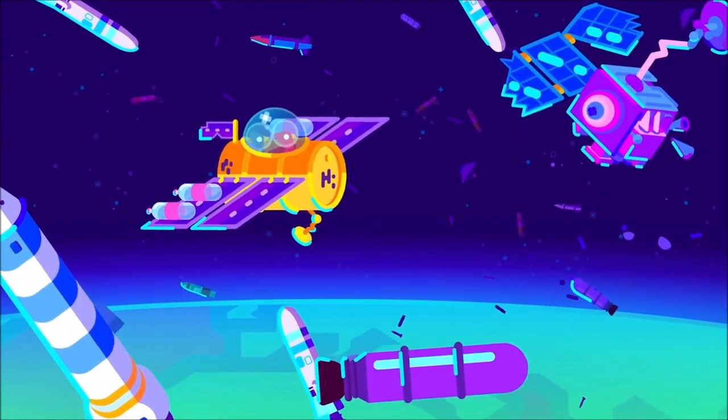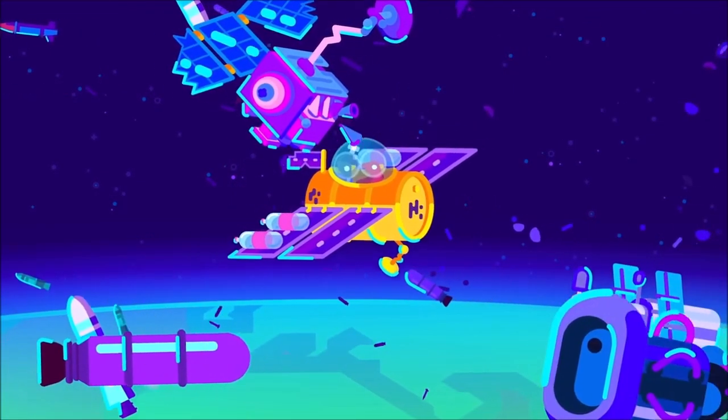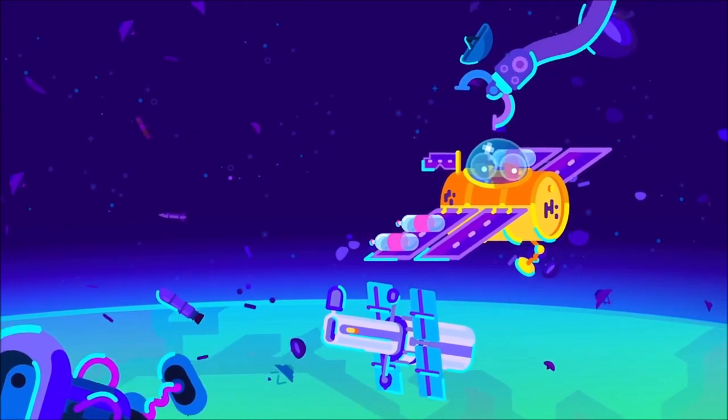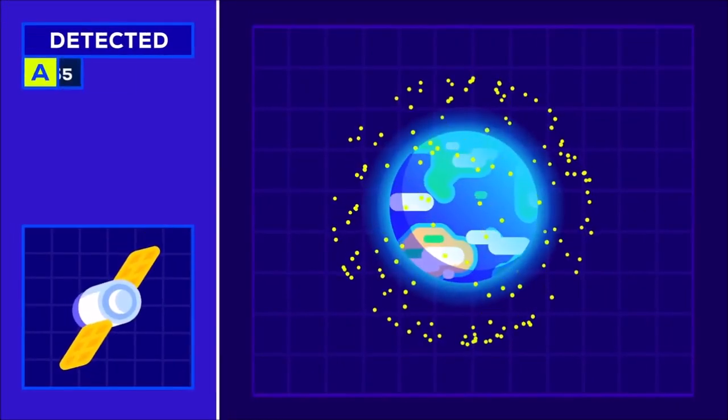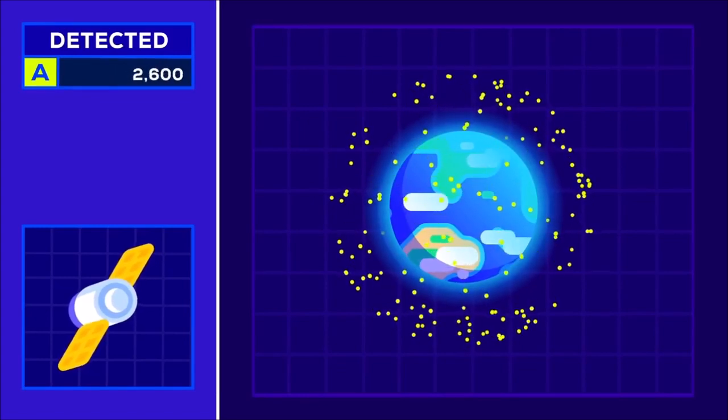low Earth orbit is a junkyard of spent boosters, broken satellites and millions of pieces of shrapnel from missile tests and explosions. Right now, we know of around 2,600 defunct satellites,